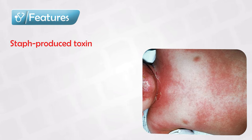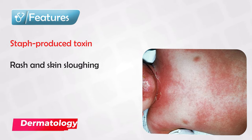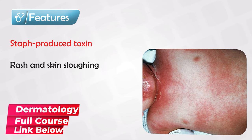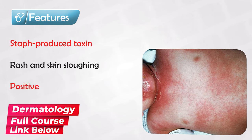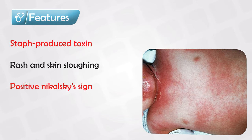The patient presents with a generalized rash with erythema and skin sloughing — basically the skin is loosely attached. If you rub the skin with your finger it will easily come off, and this is known as Nikolsky sign.